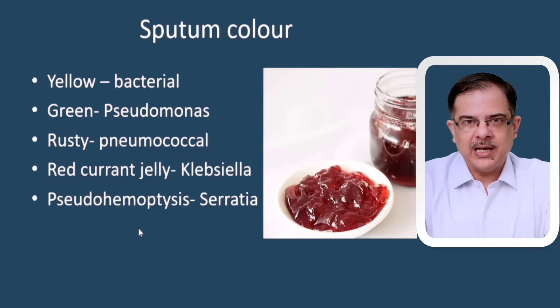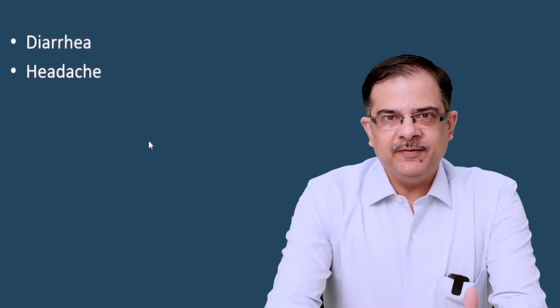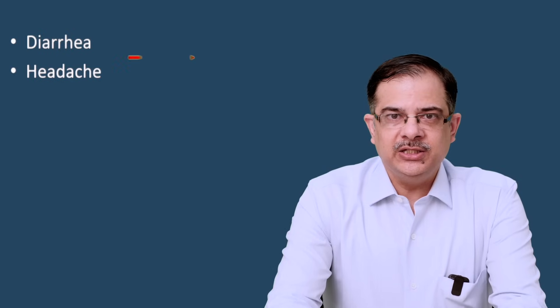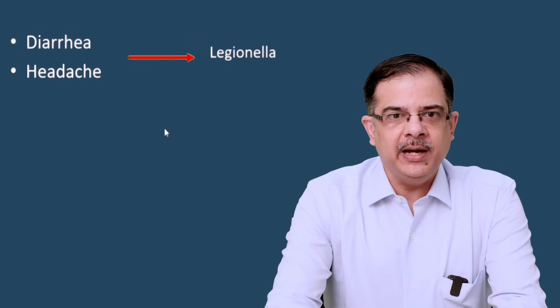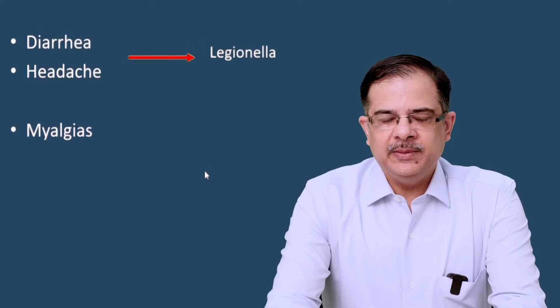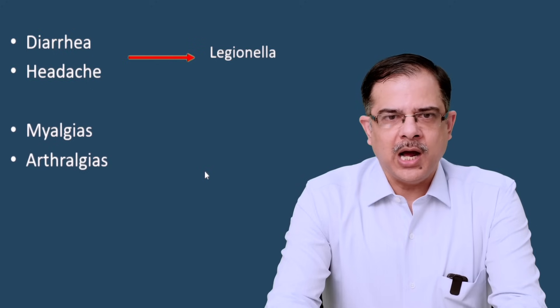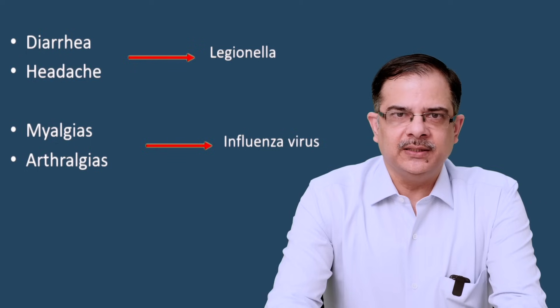Pseudohemoptysis — where the sputum color is red without actual blood — is seen in Serratia. Diarrhea or headache go in favor of Legionella, because Legionella affects the GI tract and causes SIADH leading to hyponatremia, which in turn causes headache. Myalgias or arthralgias are seen in influenza virus infection.